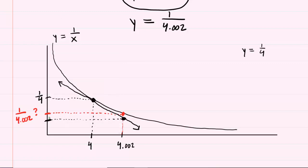which is located right here, is extremely close to the y coordinate that we are trying to estimate, the 1 divided by 4.002. So the idea here is that rather than trying to get this y coordinate right here, we will settle for finding this y coordinate, and that is sufficiently close to the one that we seek. It will be a sufficient estimate of the one that we seek.